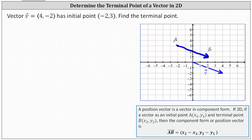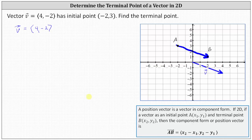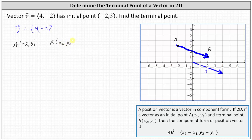Another way to determine the terminal point of vector v, where vector v has an x component of four and a y component of negative two, is to label the initial point, point A, which is given as negative two comma three, and then label the terminal point, which we assume is unknown, as x two comma y two.